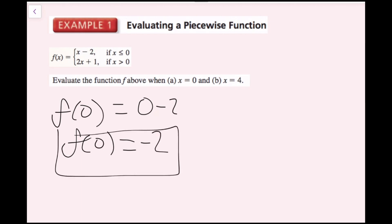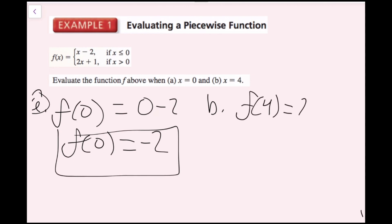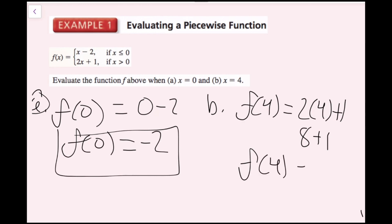That's part A. For part B, x is 4. We find the domain where 4 fits — since 4 is greater than 0, we plug 4 into 2x plus 1. So f(4) equals 2 times 4 plus 1, which is 8 plus 1, so f(4) equals 9. Now we're done with the first example.